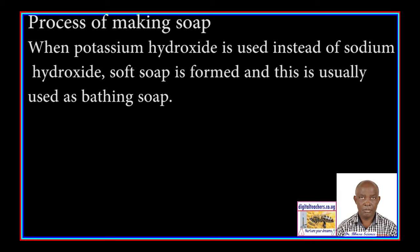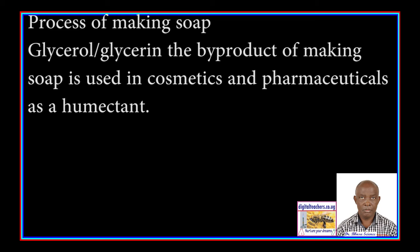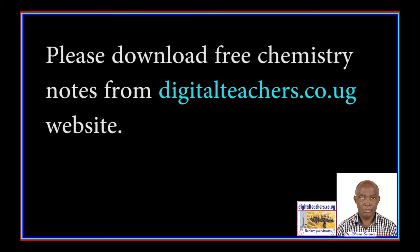When potassium hydroxide is used instead of sodium hydroxide, soft soap is formed and this is usually used as bathing soap. Glycerol or glycerin, the by-product of making soap, is used in cosmetics and pharmaceuticals.